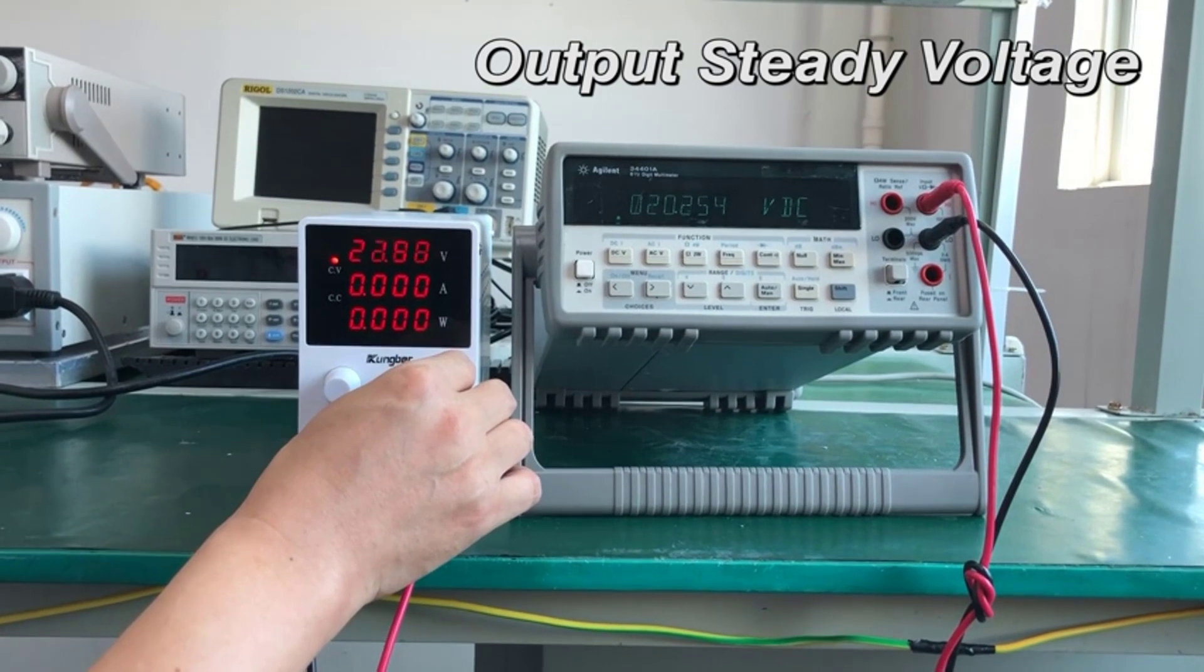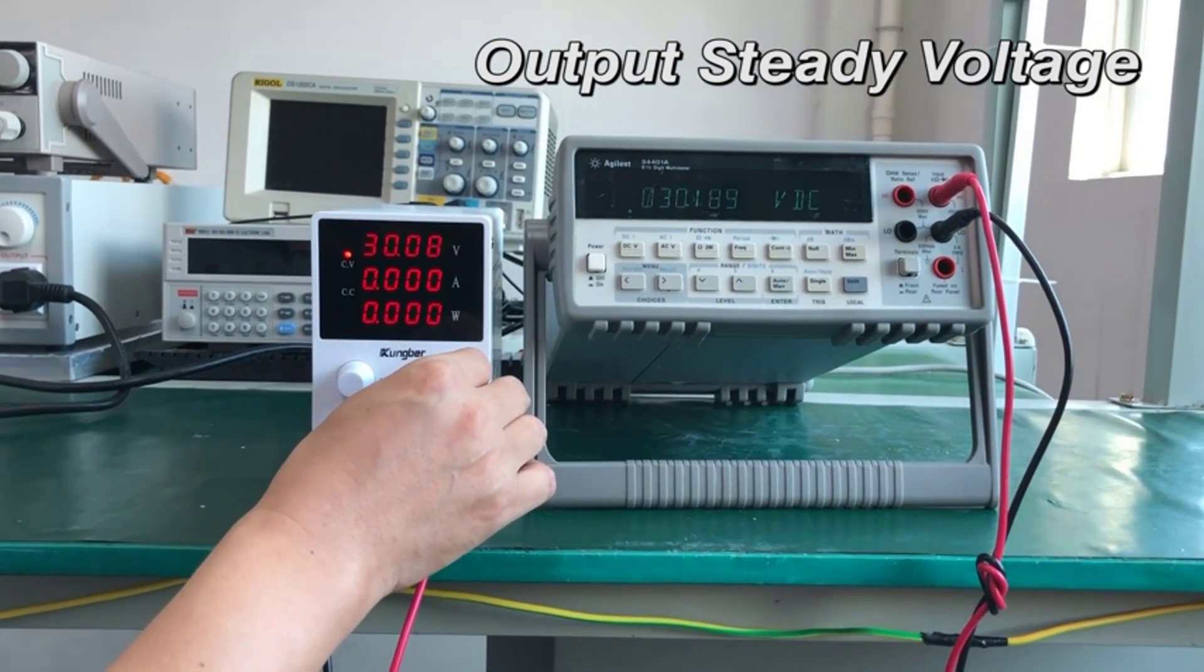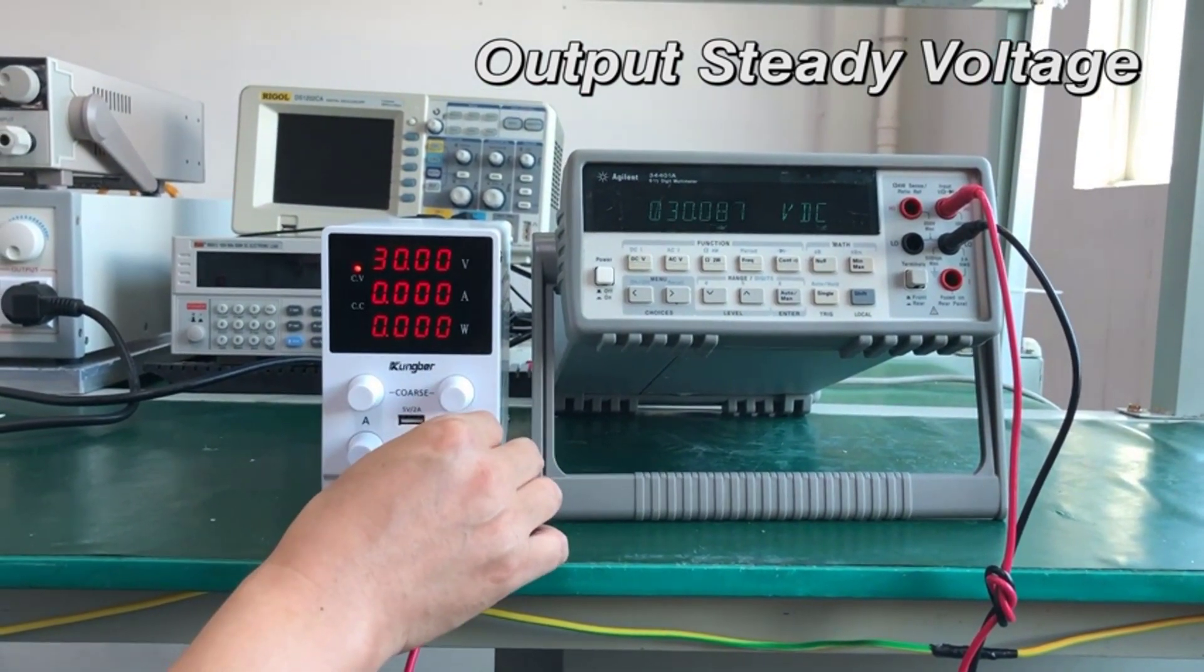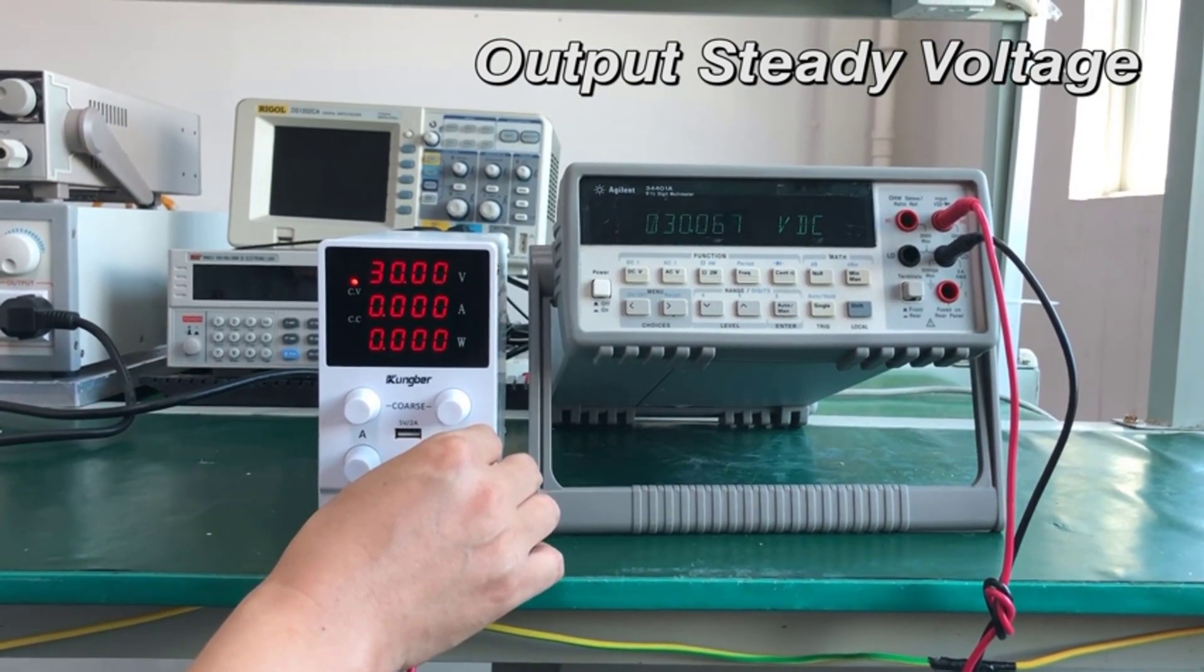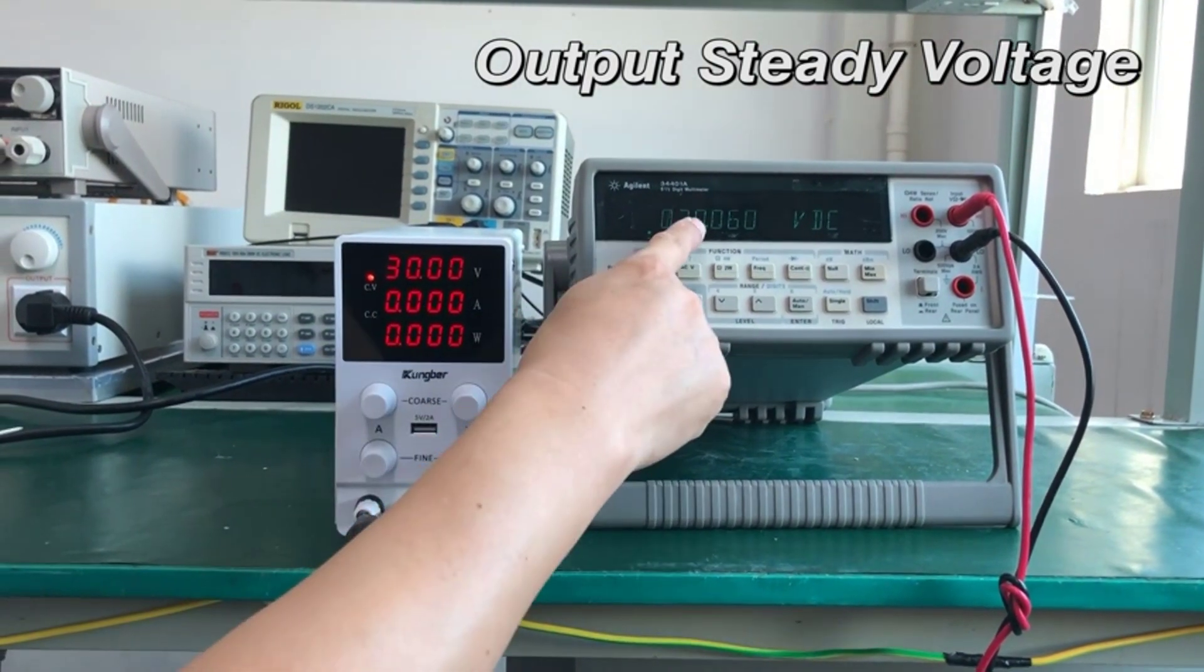There are four dials for adjusting voltage and current with separate knobs for fine and coarse values. The power supply supports both CV and CC mode with automatic conversion between modes.